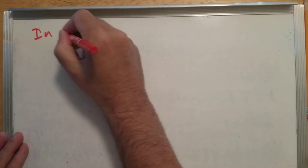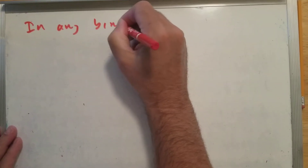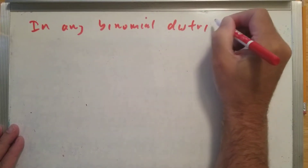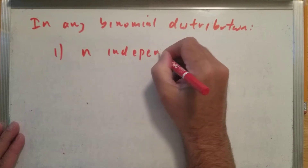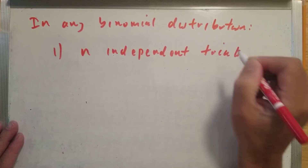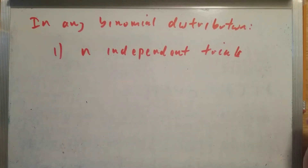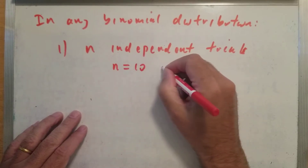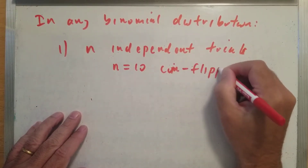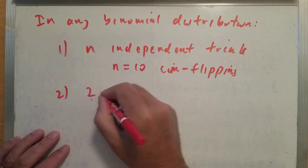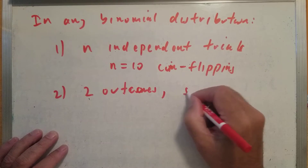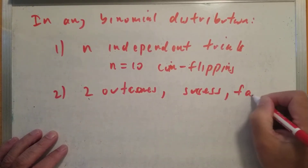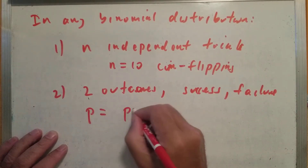In any binomial distribution, there are n independent trials. For the coin flipping, since we flipped 10 times, n equals 10. There are two outcomes: one is labeled a success, the other labeled a failure, and p is the probability of success.